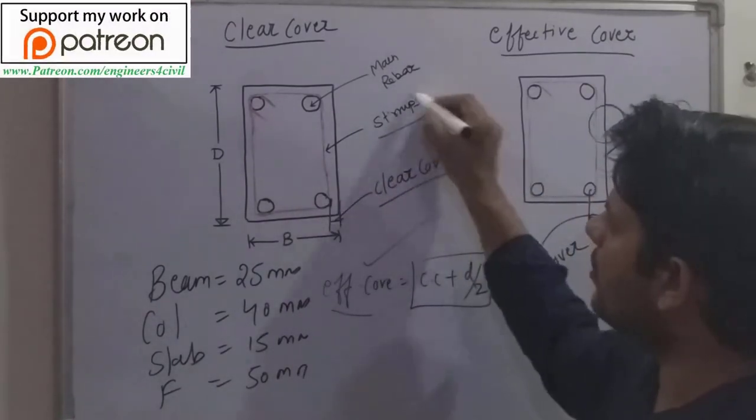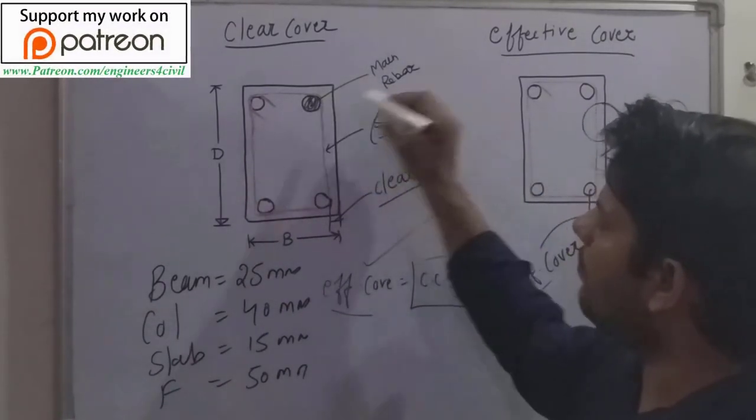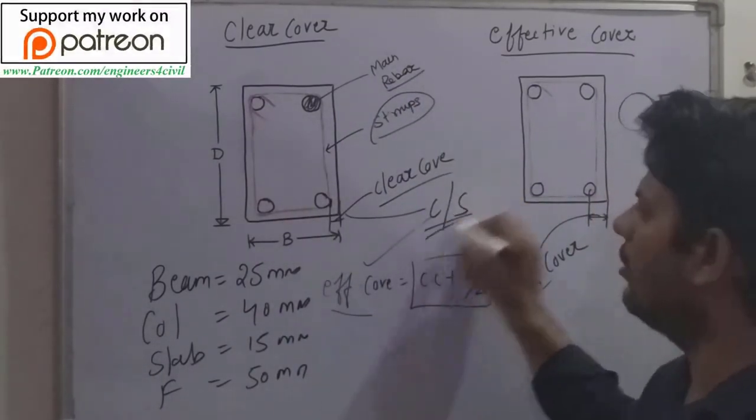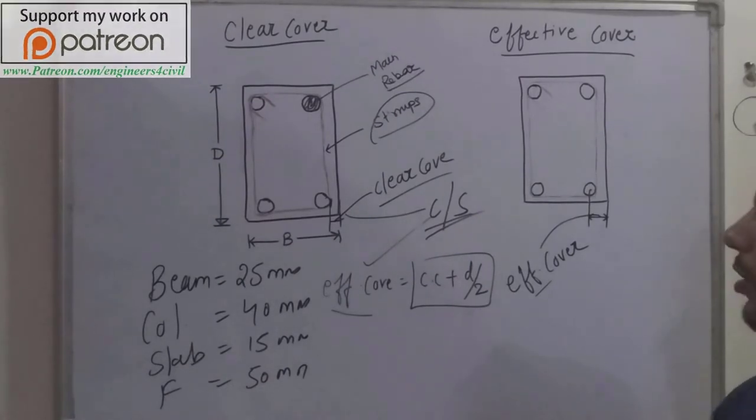This red line shows the stirrups and this circle is the main reinforcement. And this is the cross section view of the beam.